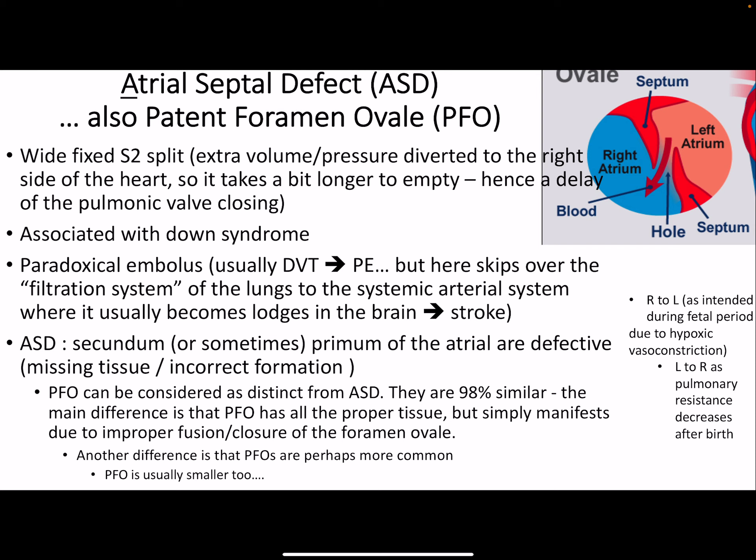An atrial septal defect is basically a PFO — instead of left ventricle to right ventricle, it's left atrium to right atrium. Extra fluid goes into the right atrium, so the right ventricle has more fluid to pump out. This further delays closure of the pulmonic valve. For the S2 sound, aortic closes first and pulmonic second, so there's now a fixed split S2 because more blood is constantly coming in through the left atrium. This is associated with Down syndrome.